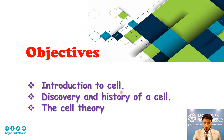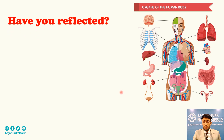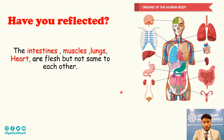Let's start it. As you see this picture, these are the organs of the human body. For example, have you noticed the intestines, muscles, lungs, the heart, or flesh — they are not the same as each other.